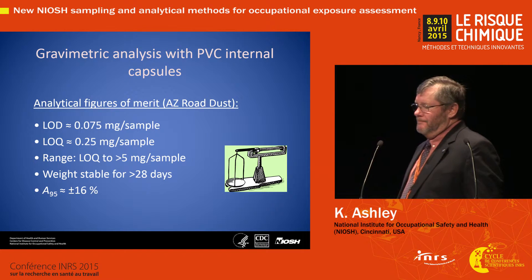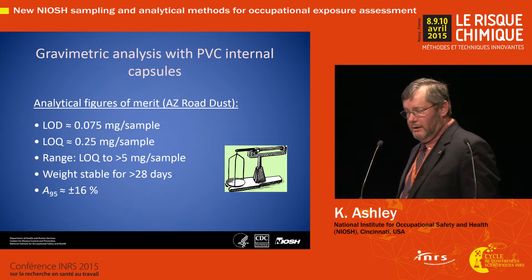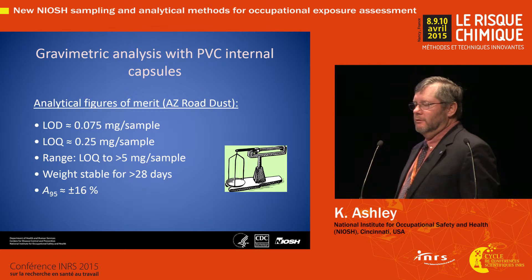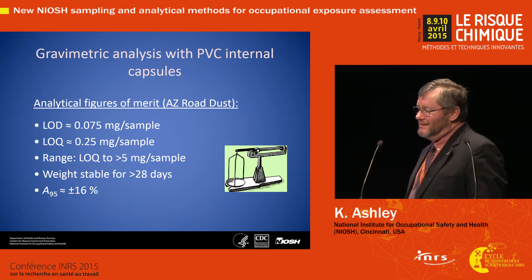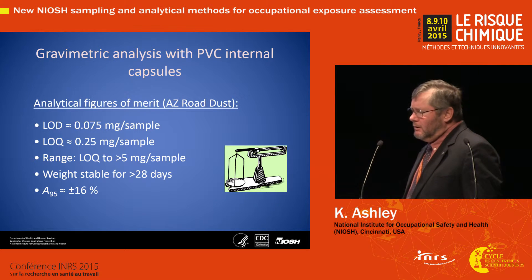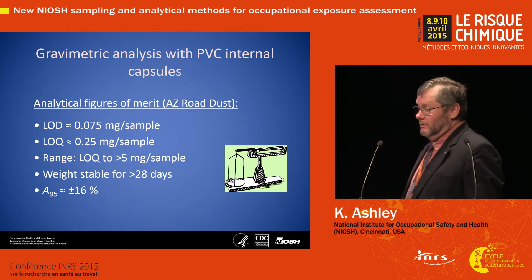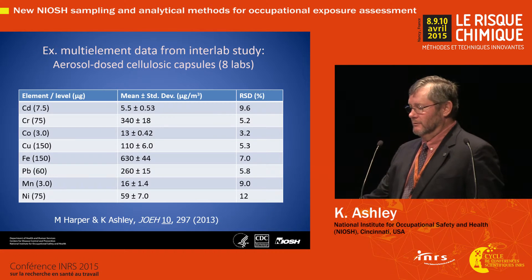Just a few figures of merit for the gravimetric method based on the use of capsules — the PVC capsules on the PVC filter are shown here. Detection limits are a factor of two or three higher than what one obtains on a PVC filter alone. However, the capacity is much greater; you can sample much more material than you can on just a filter.